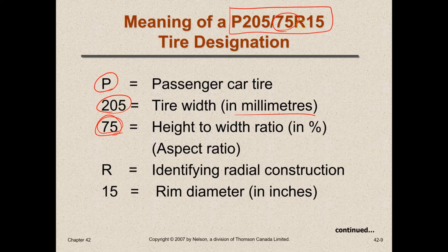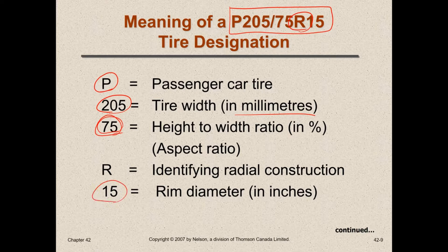The R stands for the type of tire construction — radial. Every automotive tire you buy these days will have an R there. And the last number is the rim diameter. We already talked about rim diameter — that 15 signifies a 15-inch rim.